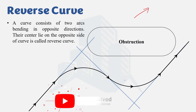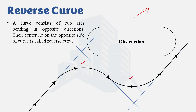A reverse curve consists of two arcs which are bending in opposite directions — one bending in the rightward direction and another bending in the leftward direction. In other words, the center of one arc is lying on one side and the center of the other arc is lying on the opposite side.